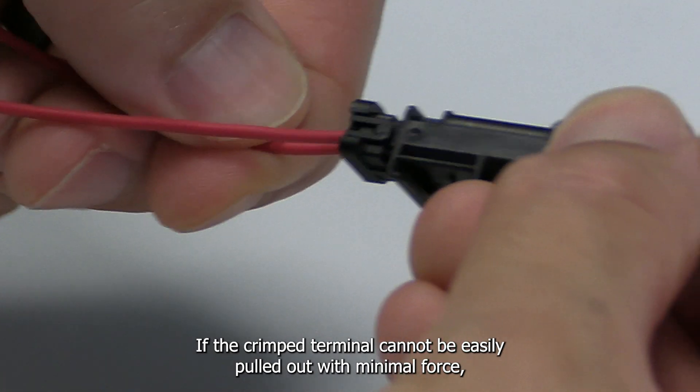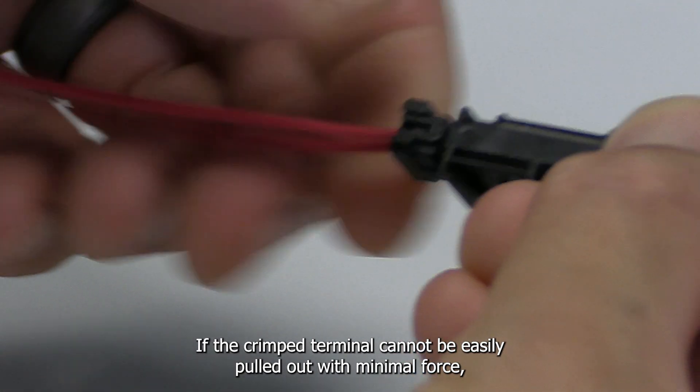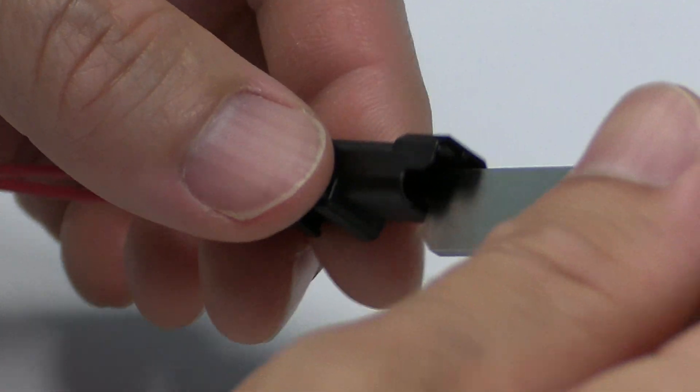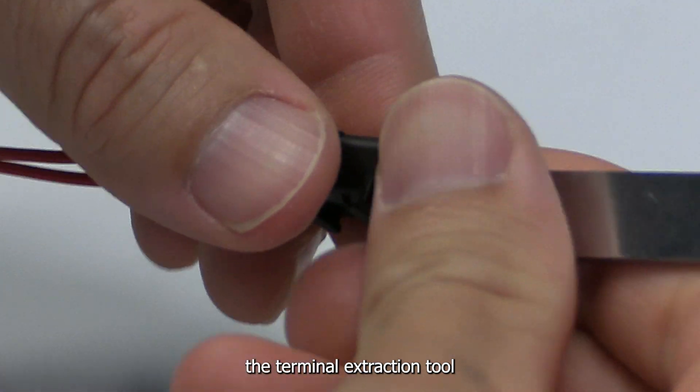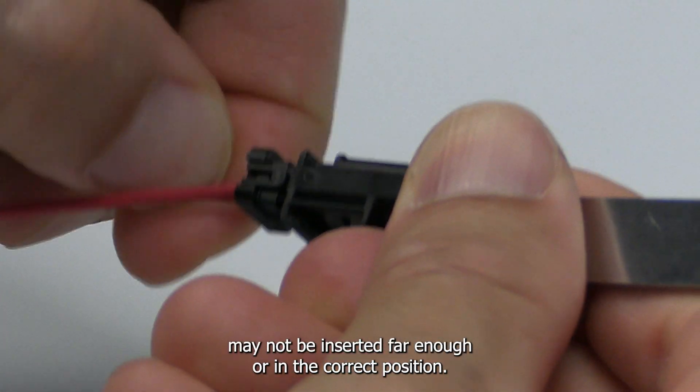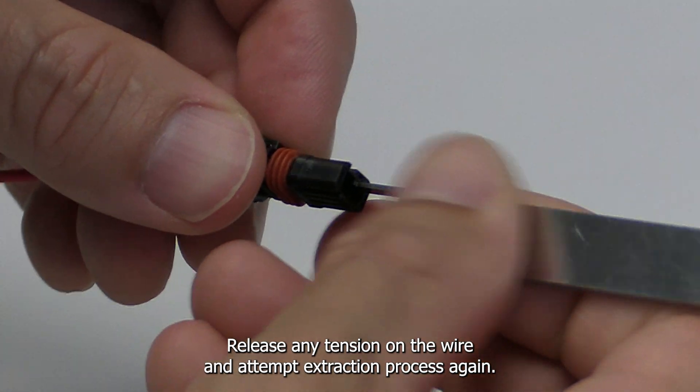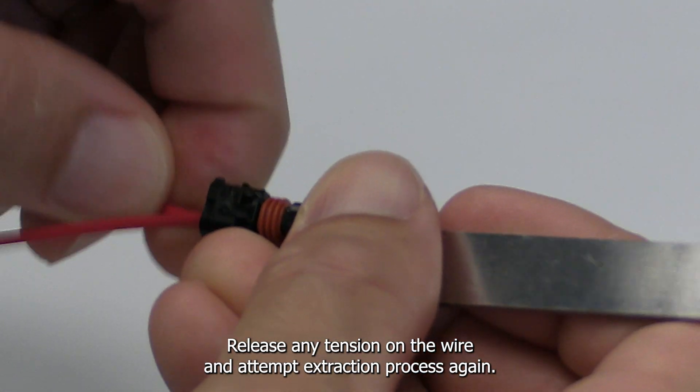If the crimp terminal cannot be easily pulled out with minimal force, the terminal extraction tool may not be inserted far enough or in the correct position. Release any tension on the wire and attempt the extraction process again.